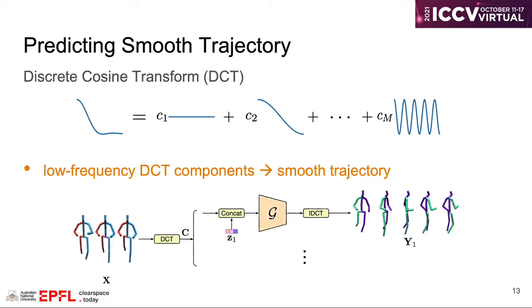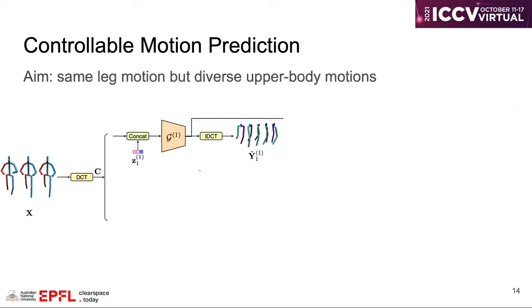In particular, instead of producing 3D poses, our generator will directly predict the low-frequency DCT coefficients and use the inverse discrete cosine transform to obtain smooth human motion.